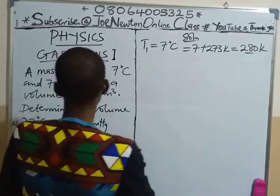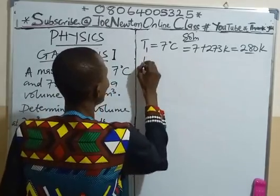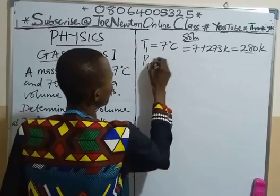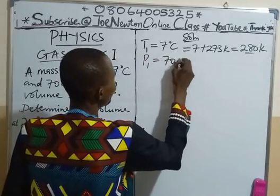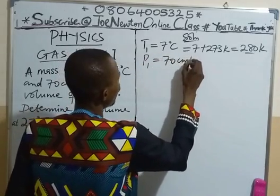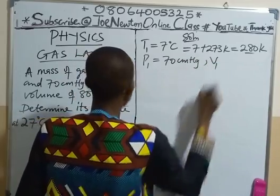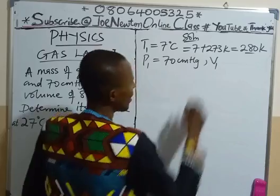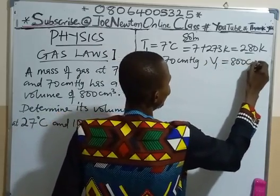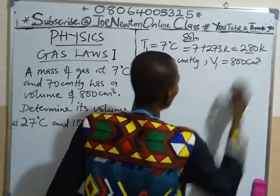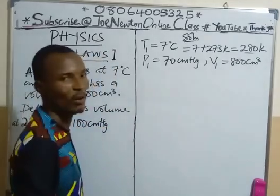Our P1, the initial pressure, is 70 centimeters of mercury, while our initial volume V1 is equal to 800 centimeter cube. These values don't need any conversion.